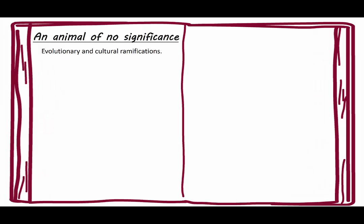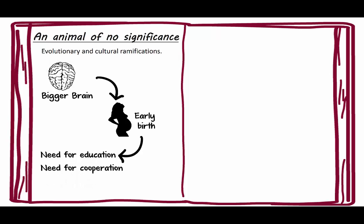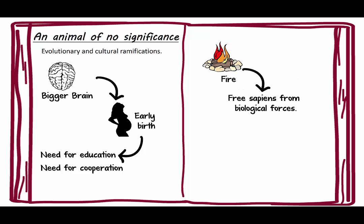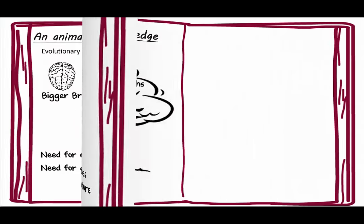As for the evolutionary and cultural ramifications of being an animal of no significance: the bigger brain meant we had to have an earlier birth, otherwise all the babies would die. That then precipitated the need for education and the need for cooperation. Fire allowed sapiens to be freed from biological forces, so we were no longer slaves to DNA and nature.